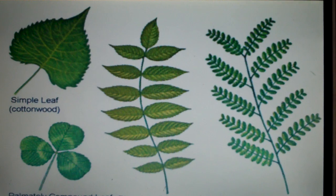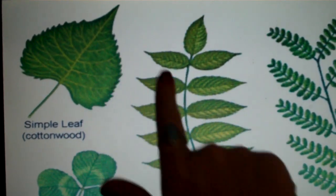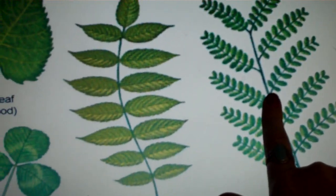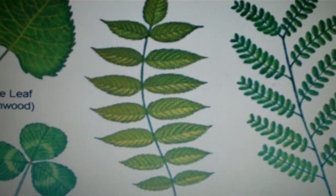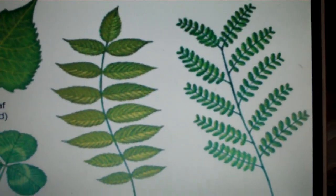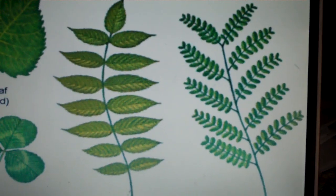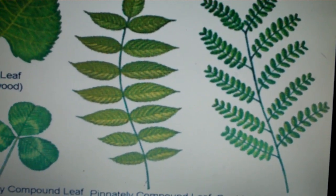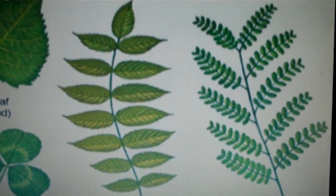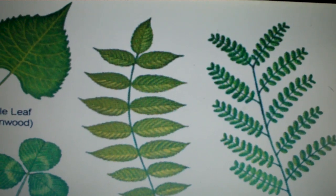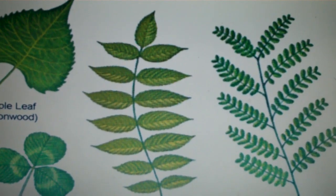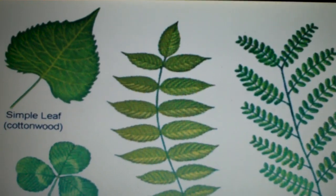Again, you'll see the three types: simple, compound, doubly compound. Now some benefits to being doubly compound or compound is that you have higher wind resistance. The wind can flow through your leaves a lot easier.